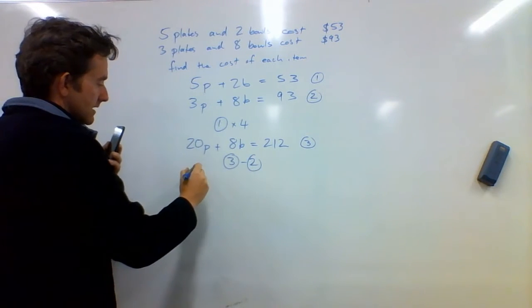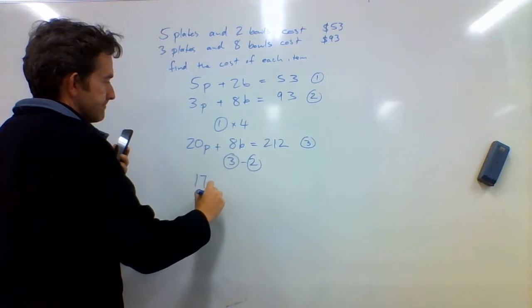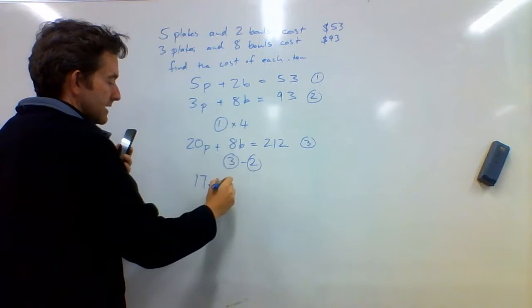So if I do 3 take away 2, 20p take 3p is 17p, 8b take 8b is no b.